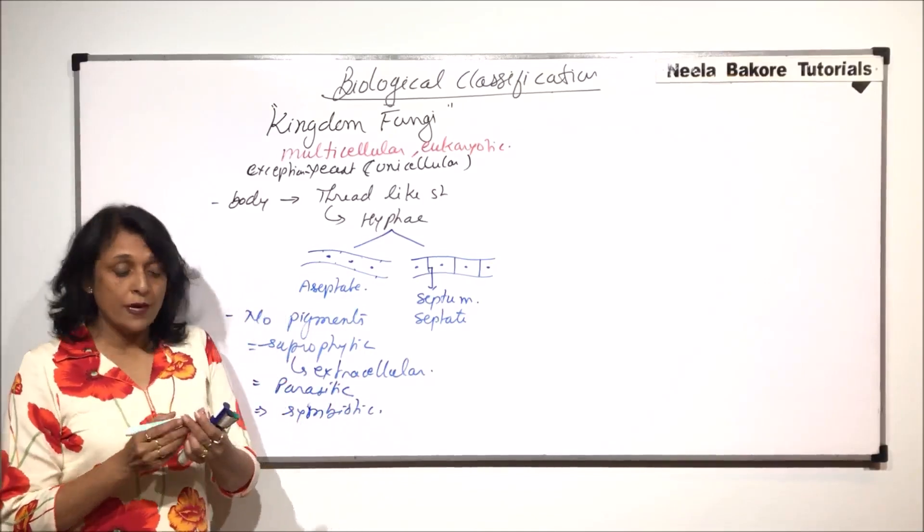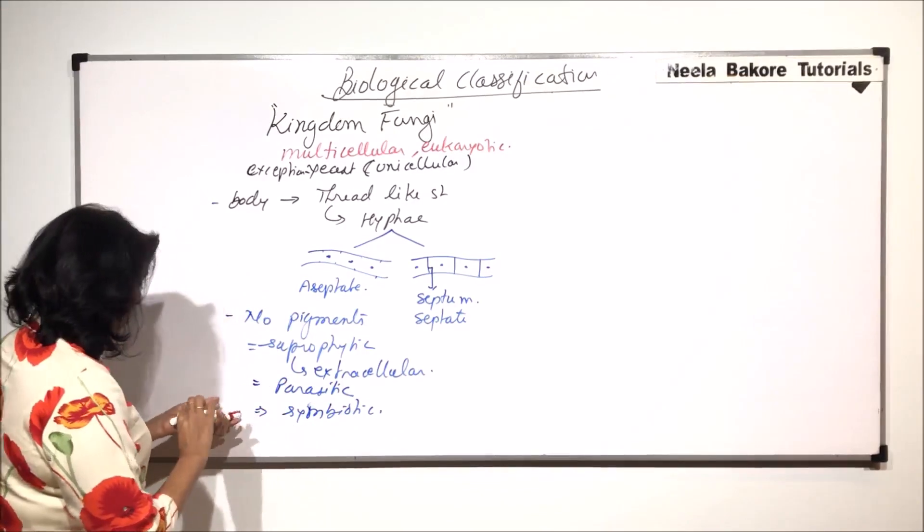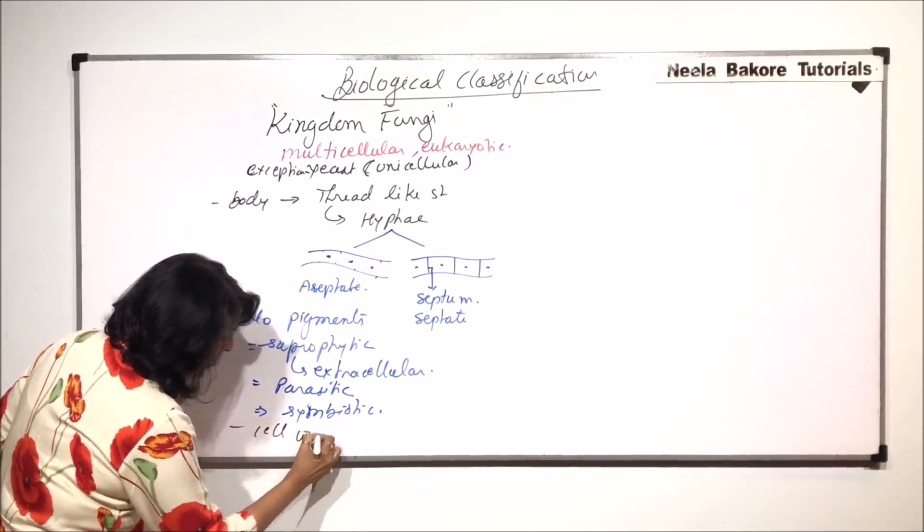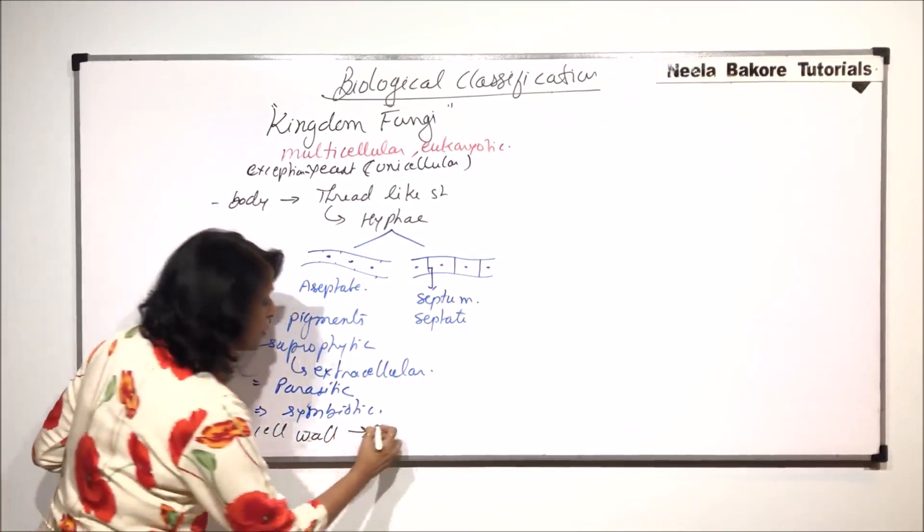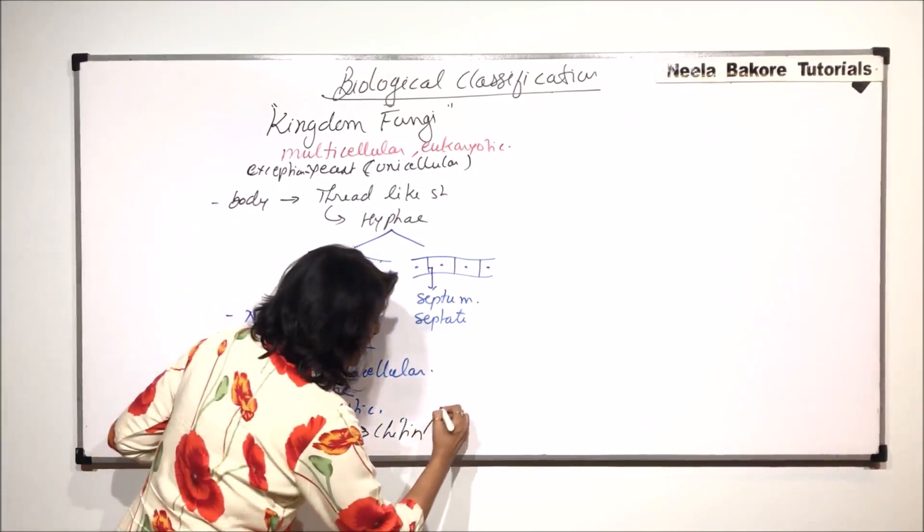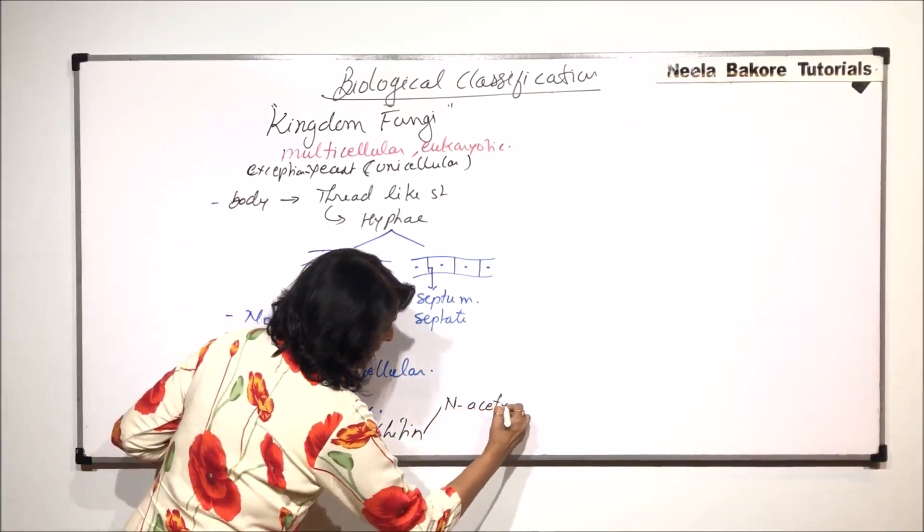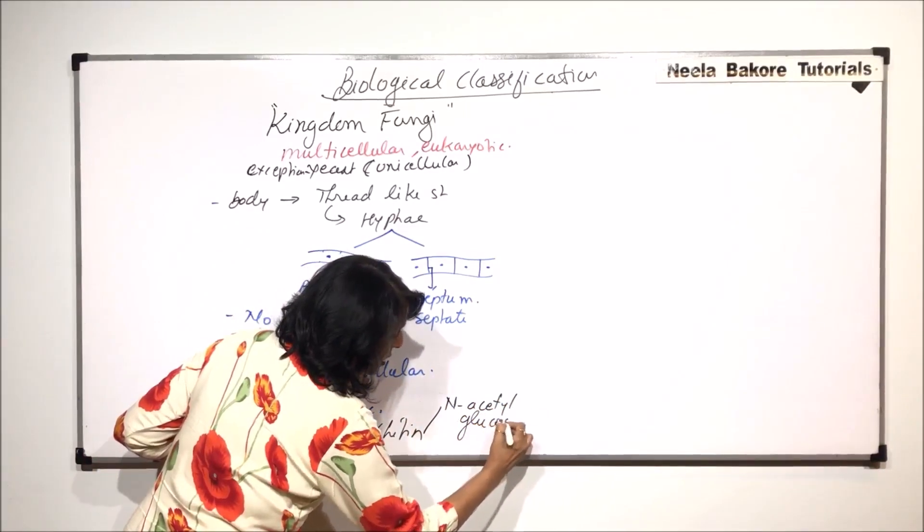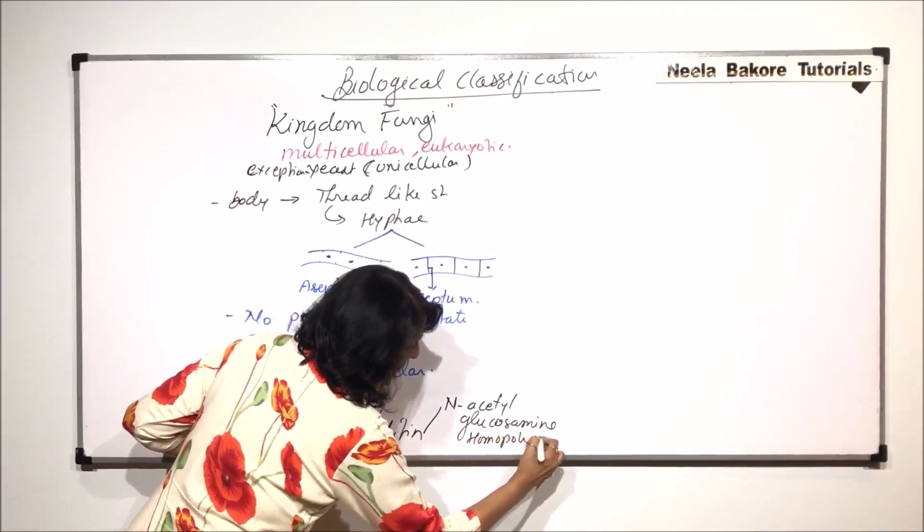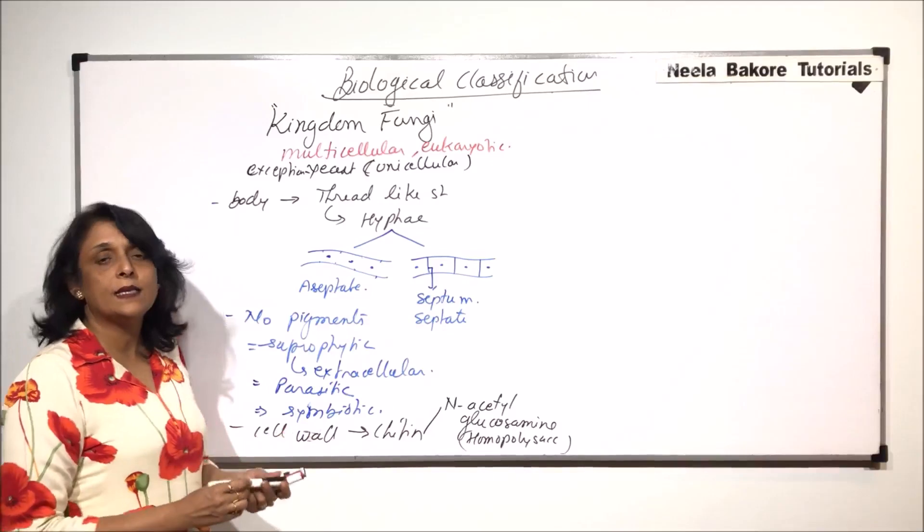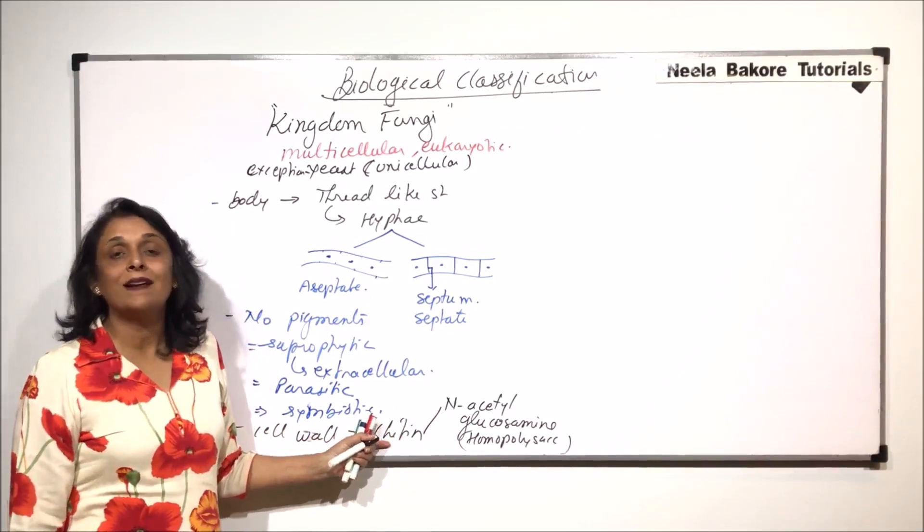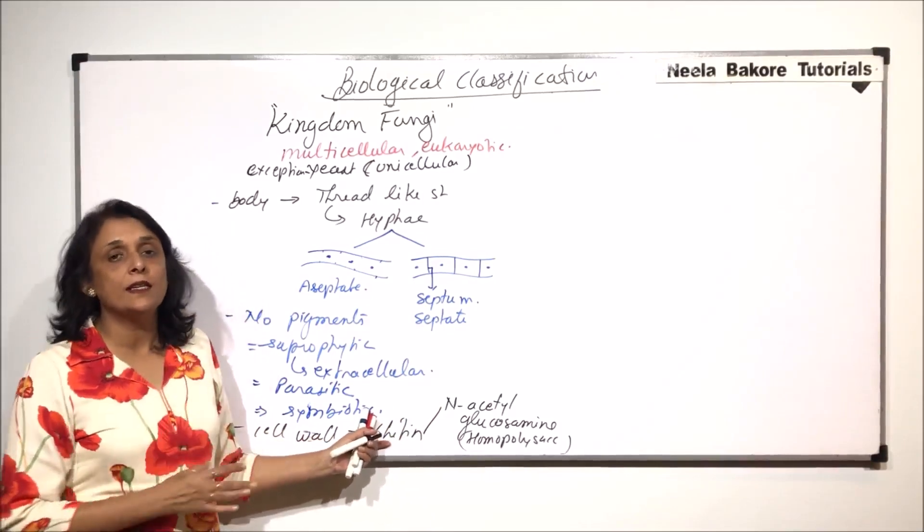Now the cell is surrounded by cell wall. So they have cell wall and this cell wall is made up of a substance which is called chitin. Chitin is a homopolysaccharide made up of N-acetyl-glucosamine. So this N-acetyl-glucosamine makes a polymer and that polymer is called chitin.